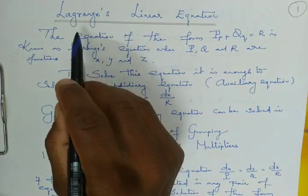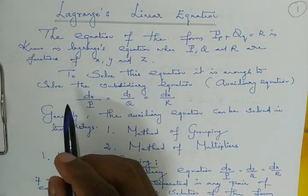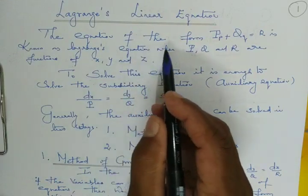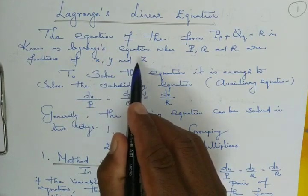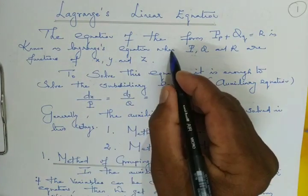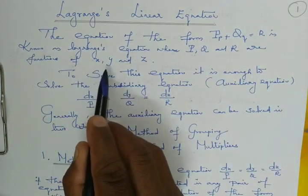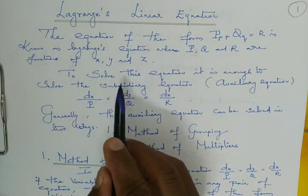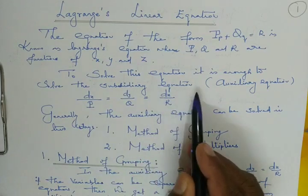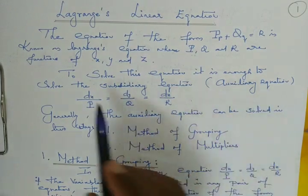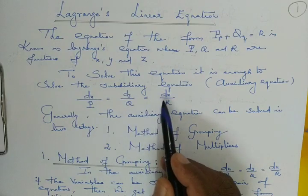Good morning friends. Now we are going to solve Lagrange's linear equation in partial differential equations. The equation of the form capital P times small p plus capital Q times small q equal to R is known as Lagrange's equation, where capital P, capital Q, and capital R are functions of x, y, and z. To solve this, first we form the auxiliary equation: dx by capital P equal to dy by capital Q equal to dz by capital R.